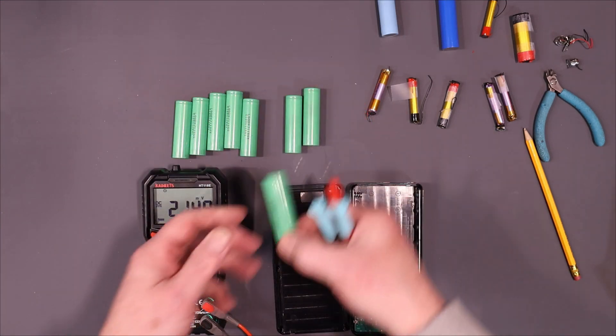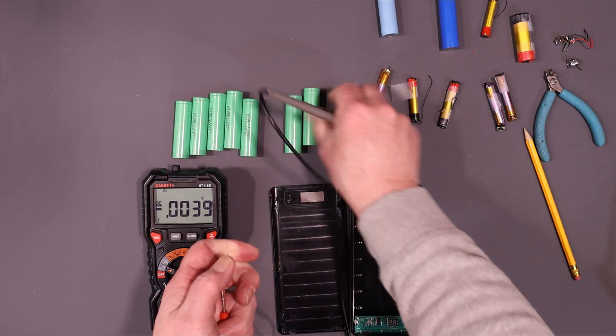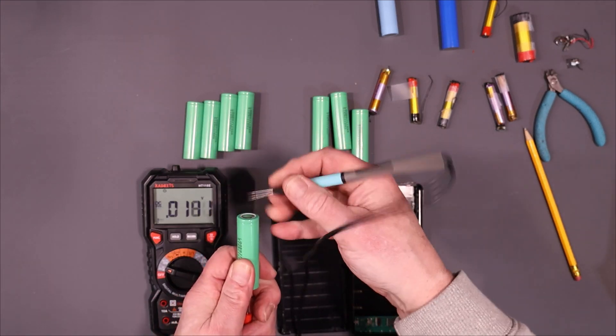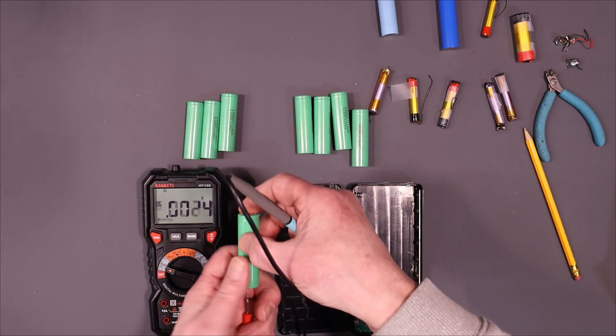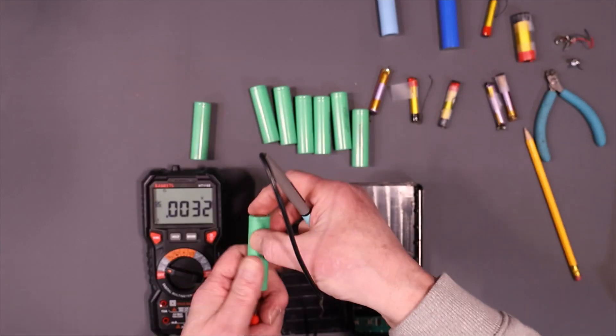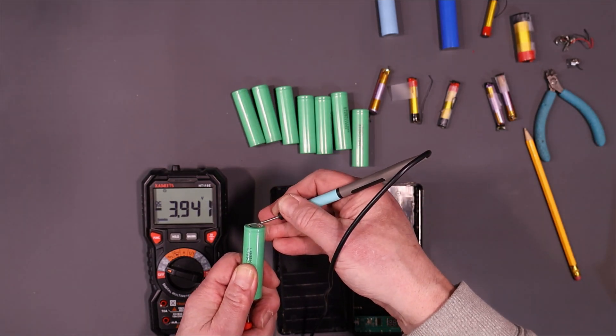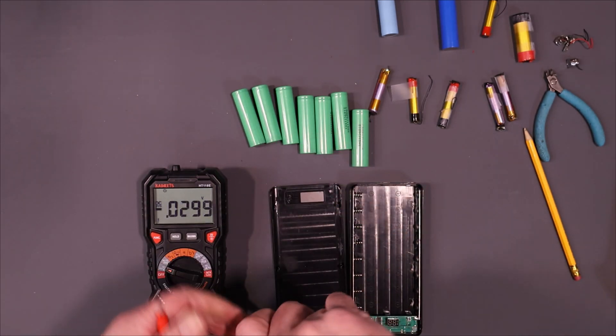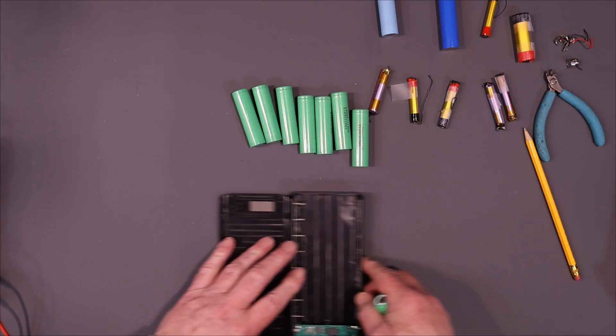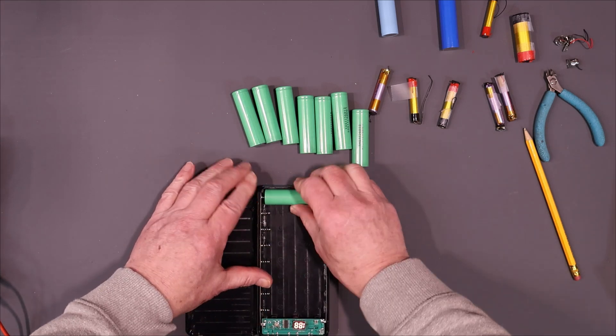Let's check all these before I put them in to make sure they're not too far apart. 3.94... They're all well within a tenth of a volt of each other. There shouldn't be any huge high currents passing through. They'll balance very quickly. Let's start popping them in here.